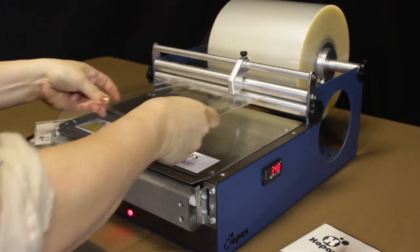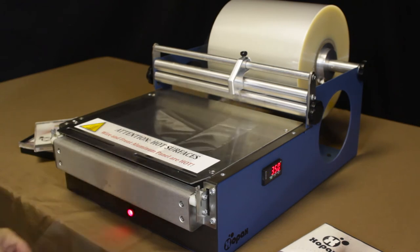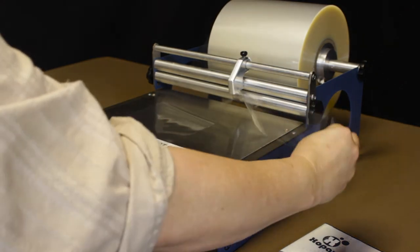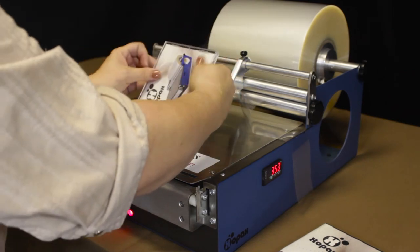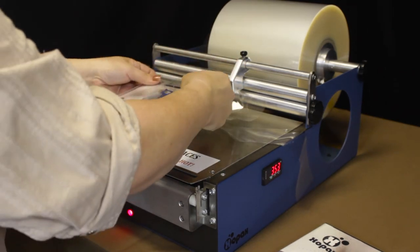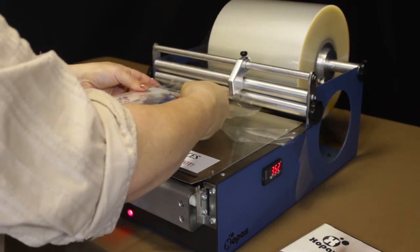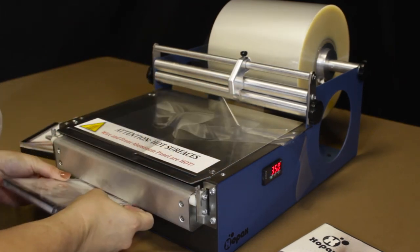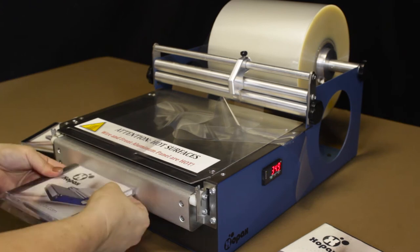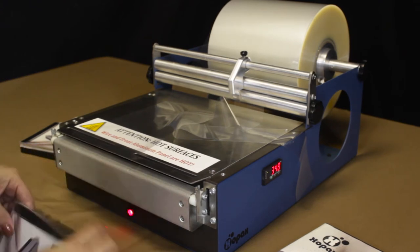And then I can just pull this forward, take the excess that I don't require for this wrap and just press that off to the side. And now I can go ahead and wrap my CD case. And again, I'm using the same technique I did previously, but I have the cutter engaged this time.